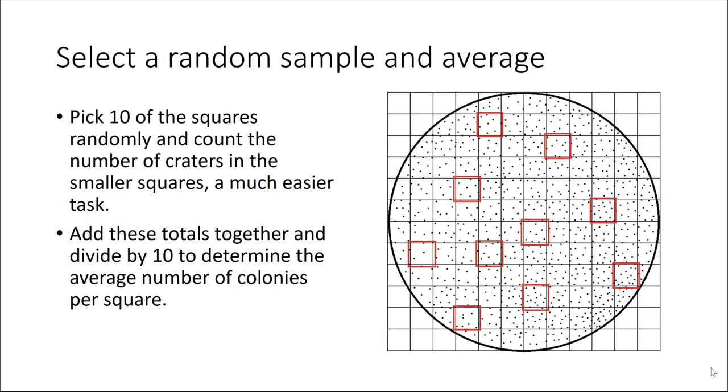Randomly select about 10 of these squares and count the number of spots within the squares themselves. In this case, 10 squares are highlighted, and I do want to emphasize you should count the number within the black lines. The red lines are just there to indicate a random selection of squares.